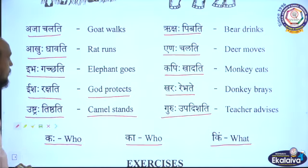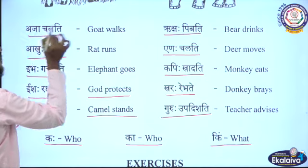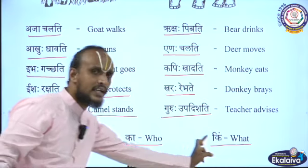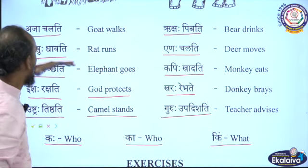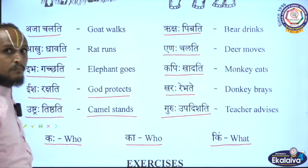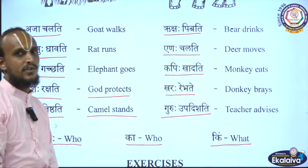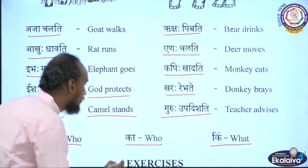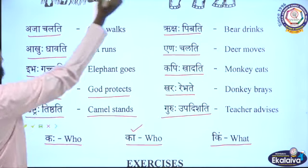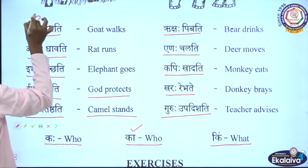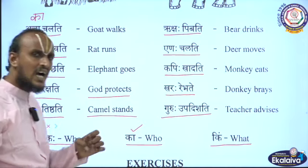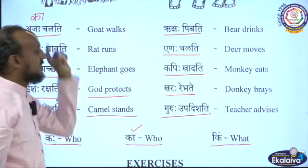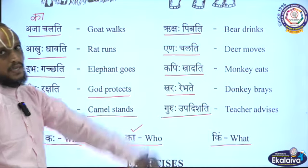For example, for the sentence 'Aja Chalati,' you have three options: Kaha, Ka, or Kim. Aja belongs to feminine gender (Streelingaha), so you select Ka. So the question becomes: Ka Chalati? — meaning 'Who is walking?' Answer: Aja Chalati — 'Goat is walking.'